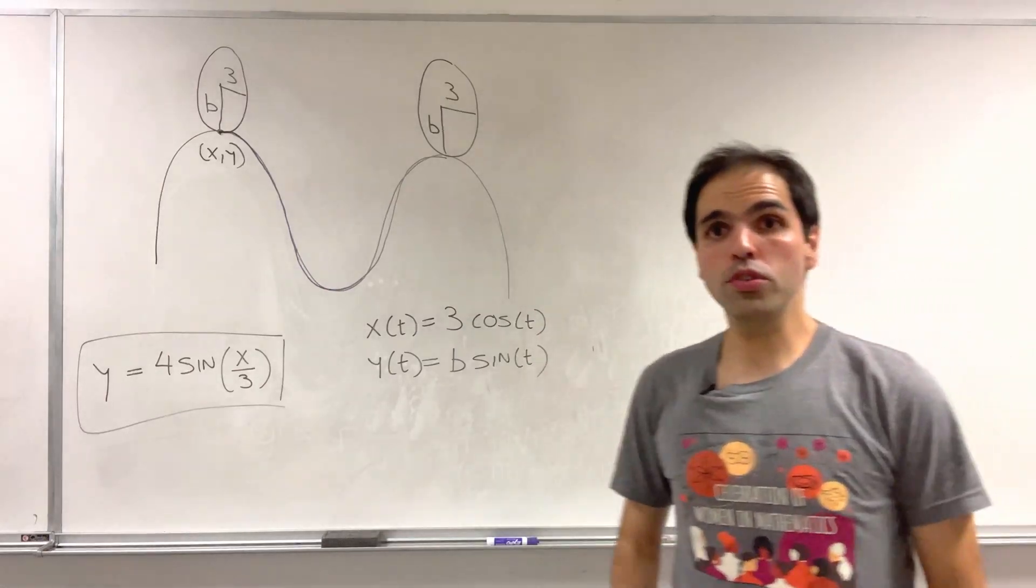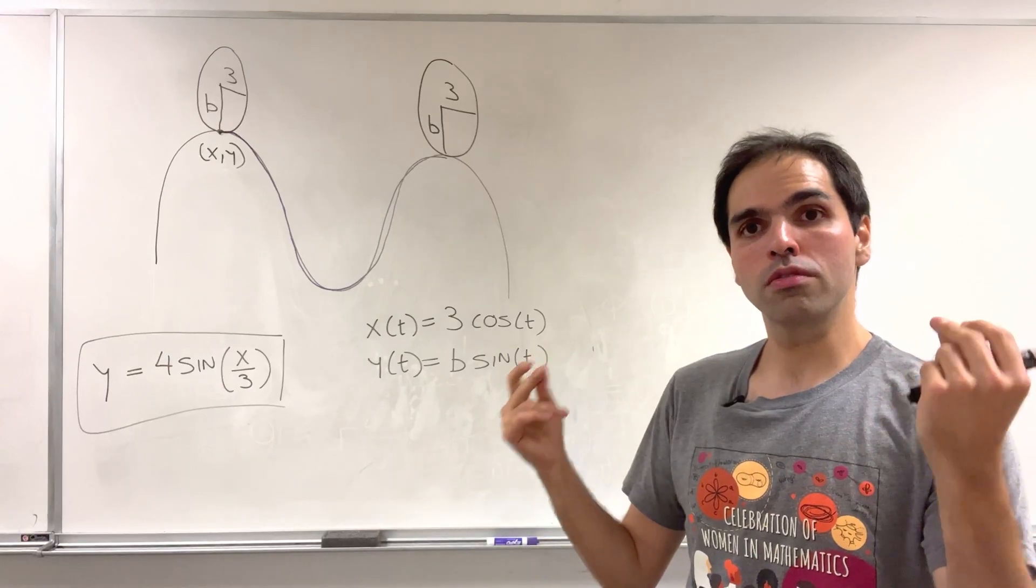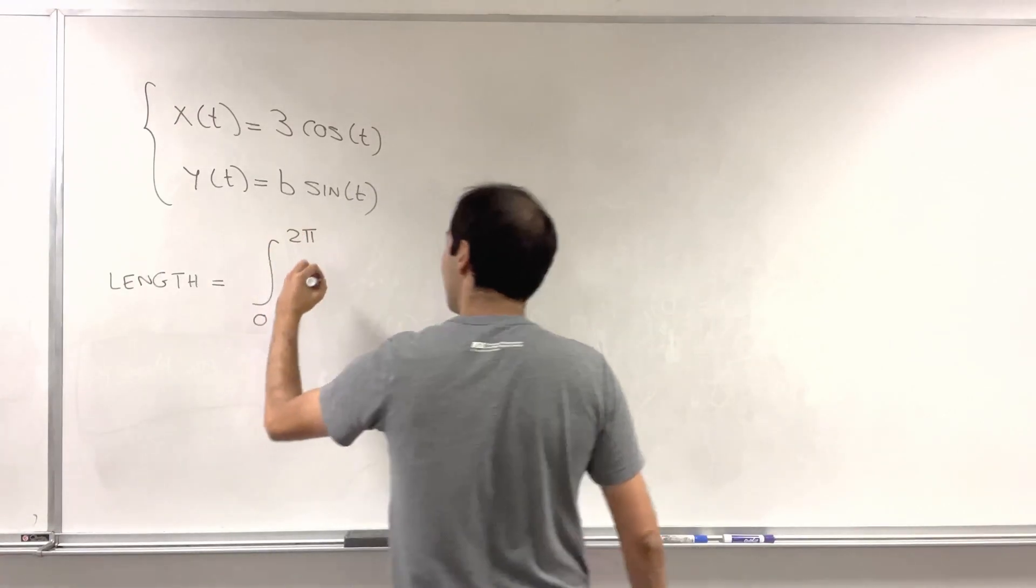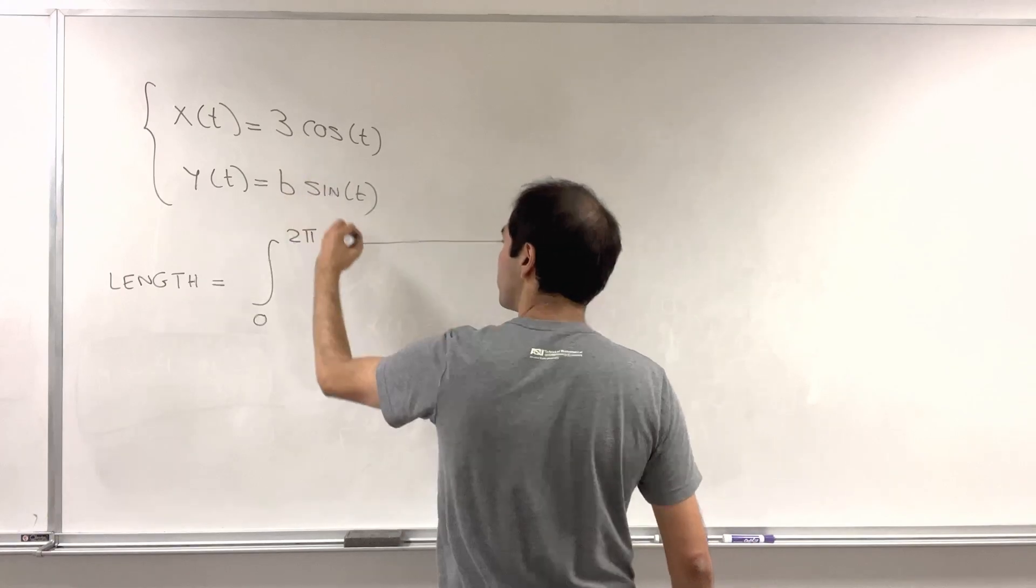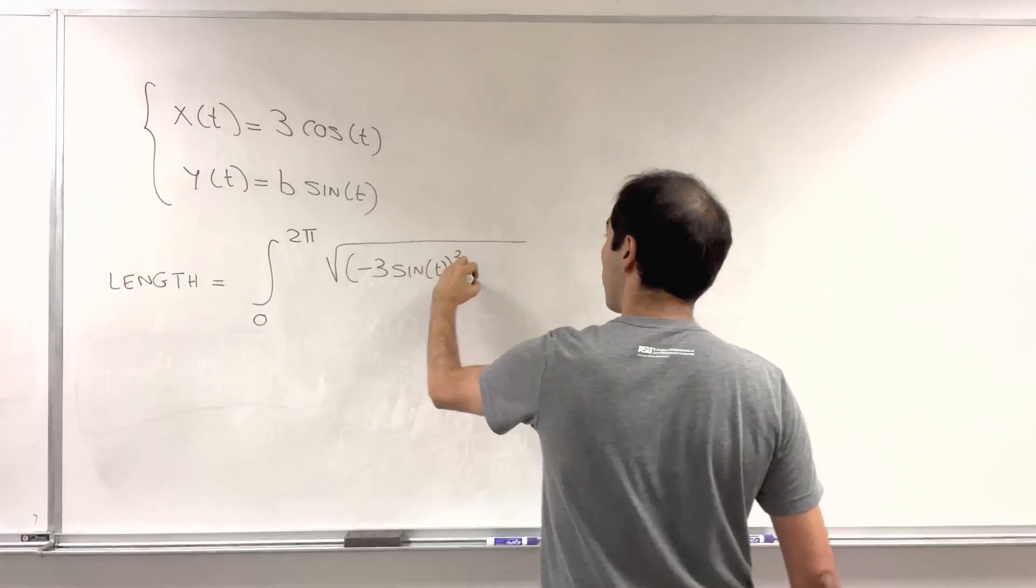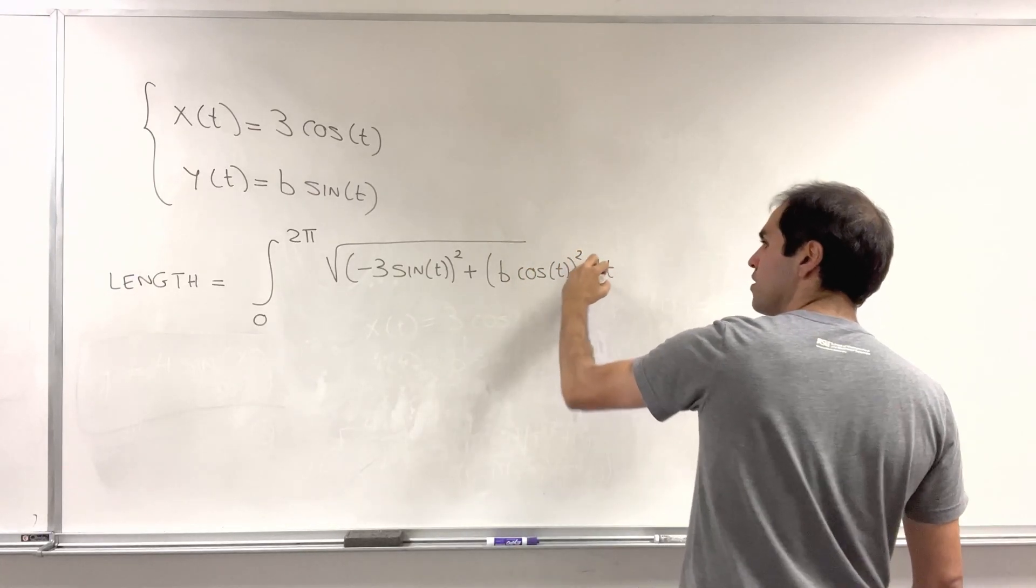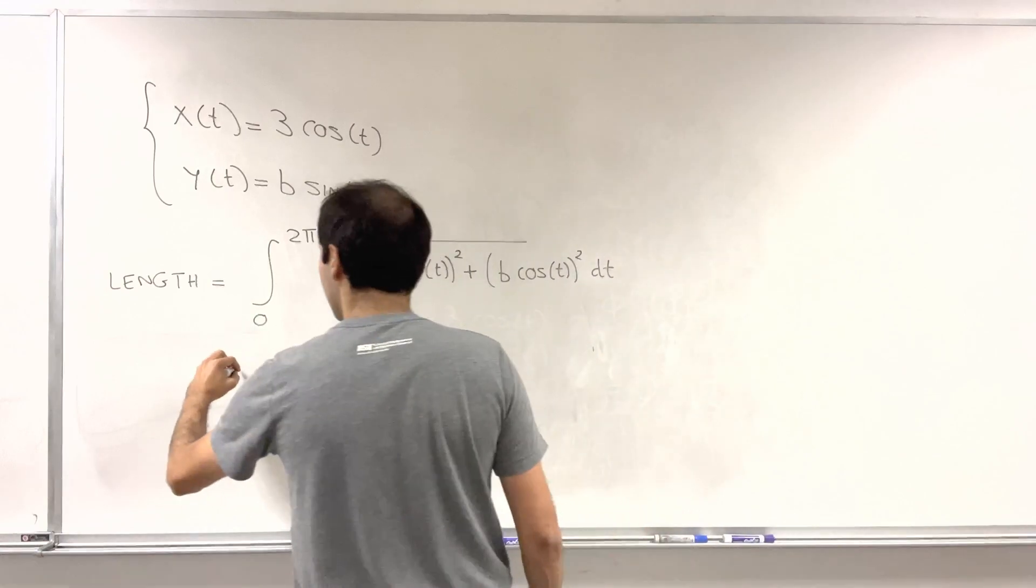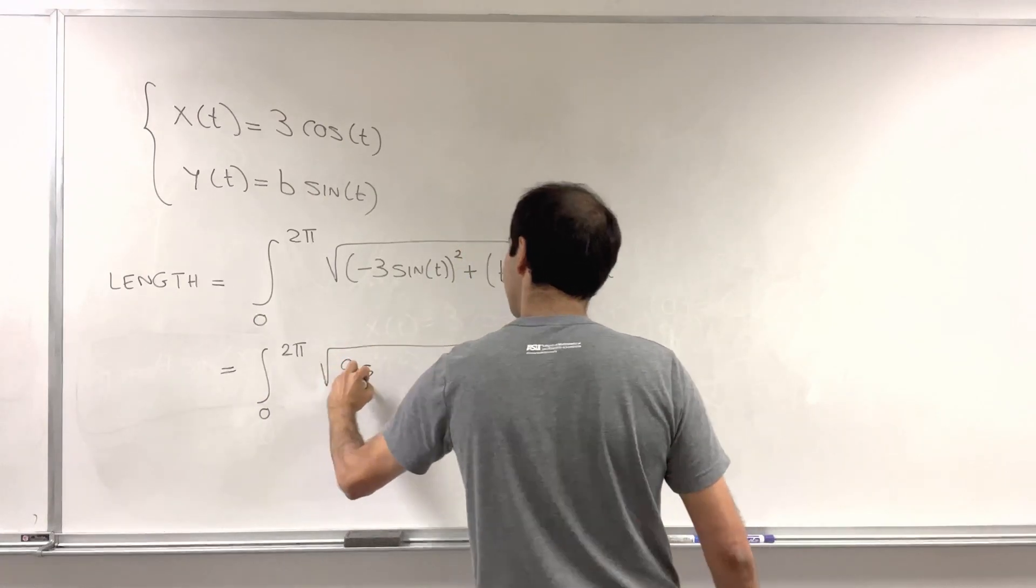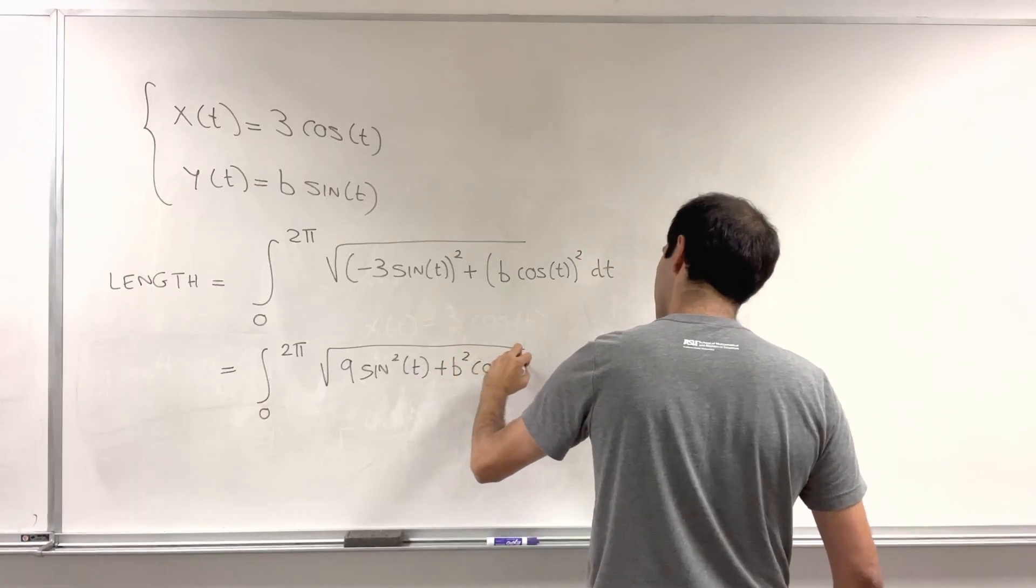And then what you can use is the calc 3 definition of arc length, which is as follows. So the length here is the integral from 0 to 2 pi of square root of x prime squared. So minus 3 sine of t squared plus y prime squared. So b cosine t squared dt, which you can simplify to integral from 0 to 2 pi square root of 9 sine squared of t plus b squared cosine squared of t dt.